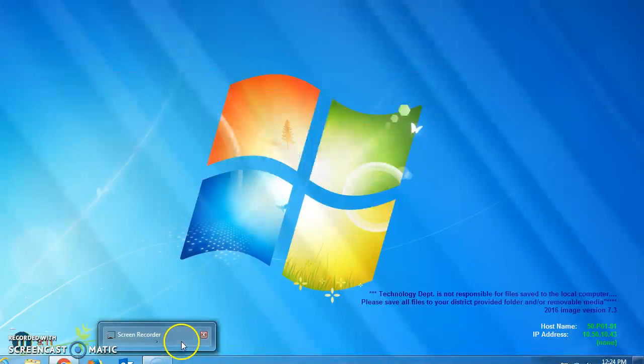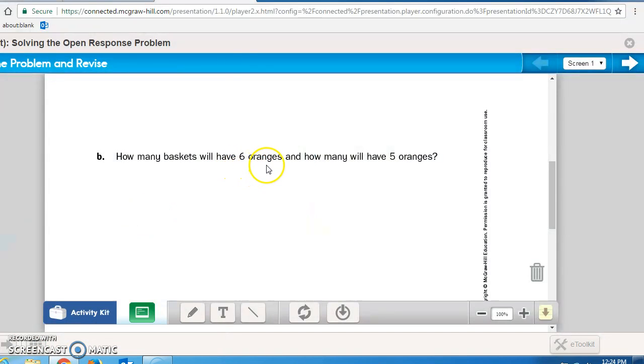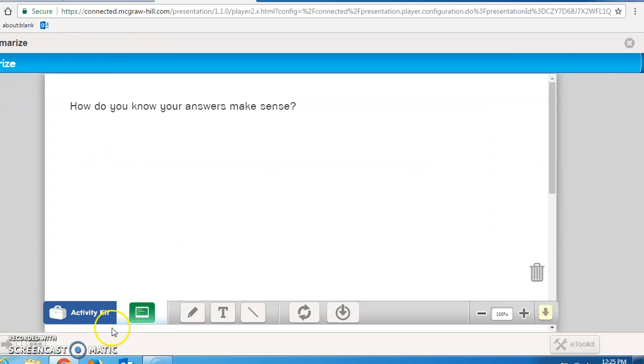Question B asks, how many baskets will have 6 oranges and how many will have 5 oranges? Well, hopefully from your drawing, you will easily be able to answer that question. Again, how do you know your answer makes sense? You should be comparing the two.